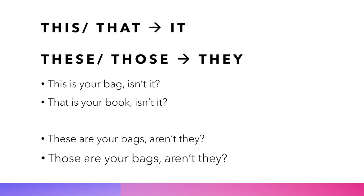Notes: 'This' or 'that' will become 'it' in the tag, while 'these' or 'those' become 'they.' For example: 'This is your bag, isn't it?' 'That is your bag, isn't it?' 'These are your bags, aren't they?' 'Those are your bags, aren't they?'